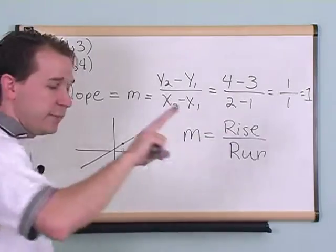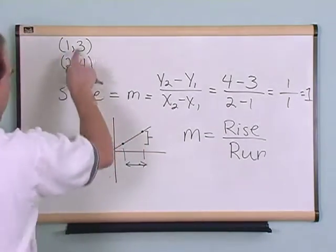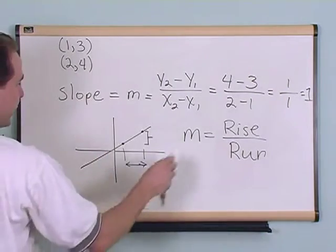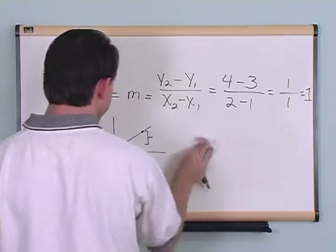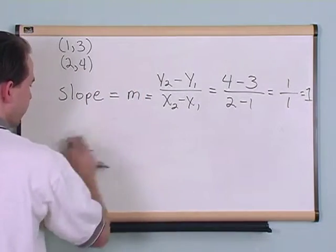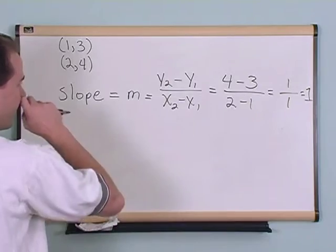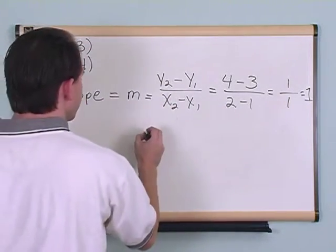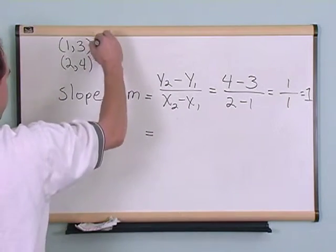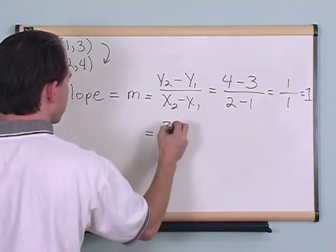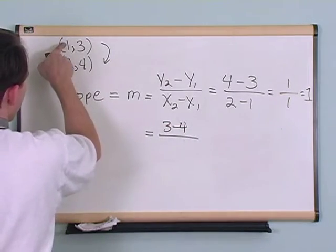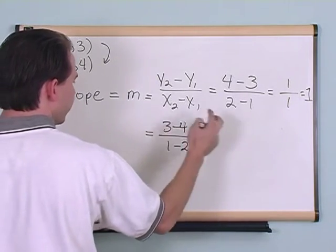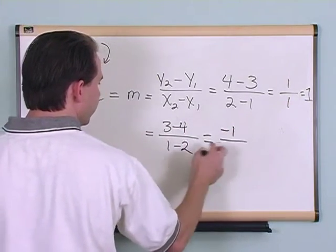The only thing you need to be careful about when you do this, you can subtract the y values in any order that you want as long as you do it consistently. And what I mean by that is the following. Let me just give you a quick example of what I'm talking about there. In this case, we went 4 minus 3 on the top and 2 minus 1 on the bottom. You can also do it the other way, going this way. 3 minus 4, okay, and then 1 minus 2. Let's see what we get. 3 minus 4 is negative 1, 1 minus 2 is negative 1.